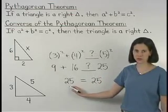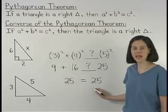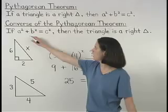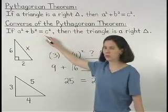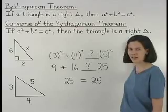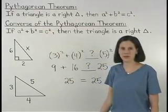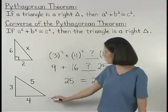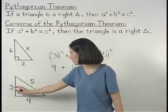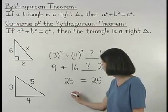So a squared plus b squared equals c squared. And remember that if a squared plus b squared equals c squared, then the triangle is a right triangle by the converse of the Pythagorean theorem. So the triangle with sides of lengths 3, 4, and 5 must be a right triangle.